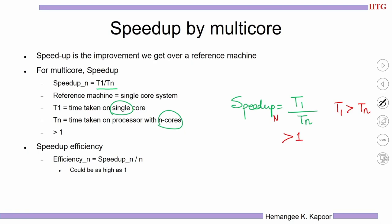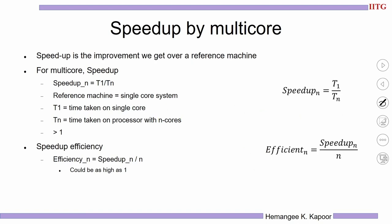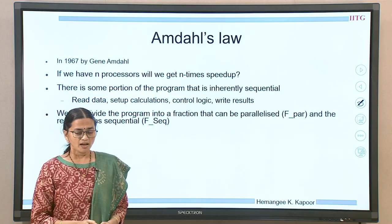We also define another term called efficiency. Efficiency is how useful my n cores were — the speedup we got by using n cores divided by n, because the max value we can get is n, as we have n processors we can do as good as n. So efficiency is speedup obtained divided by n. This fraction's max value will be equal to 1. The efficiency of my system can be at most equal to 1.